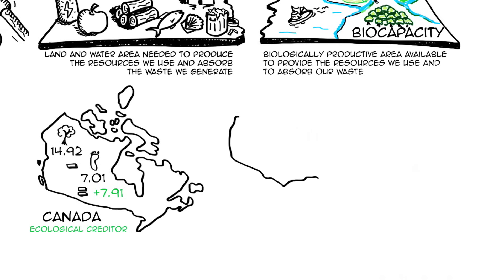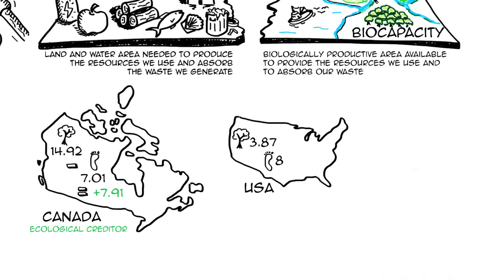The United States has a footprint of 8 and a biocapacity of 3.87, so the difference is minus 4.13 — making them a big ecological debtor country. This is actually the case for most developed countries.